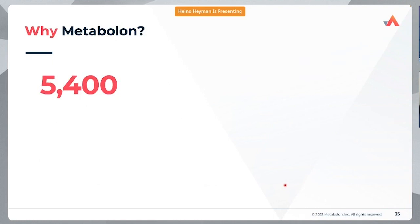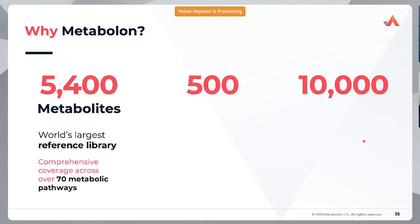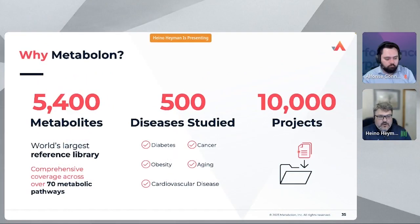Why Metabolon? Let the numbers do the talking. 5,400 — the world's largest reference library of biologically relevant metabolites. We have conducted studies on over 500 different diseases. And 10,000 — the number of projects we have completed, with over 20 years of experience in metabolomics. We'd be happy to see how we can help anyone discover new biological insights.